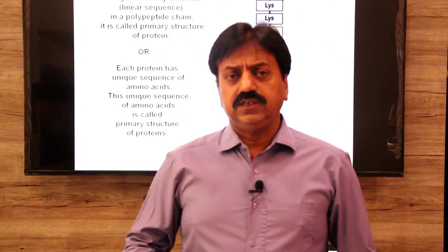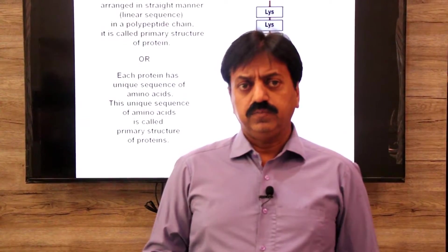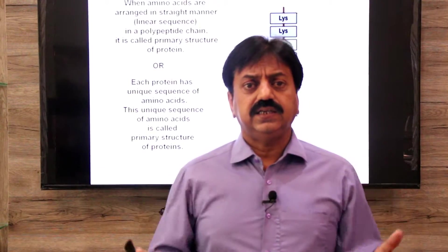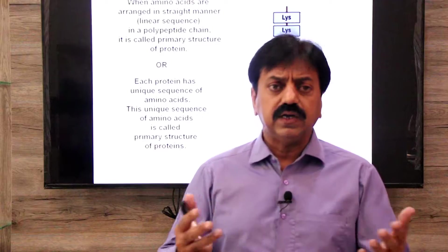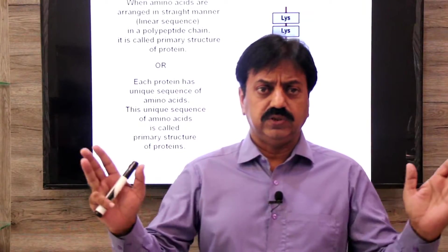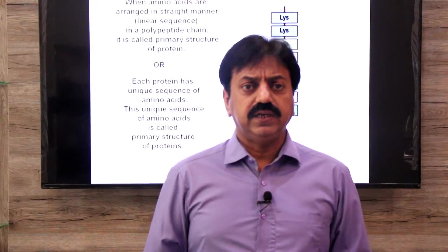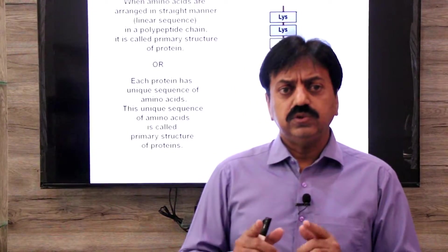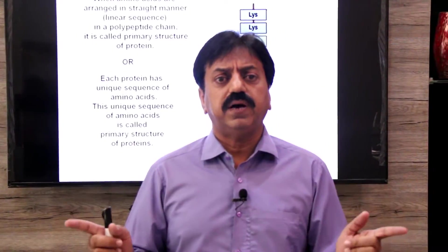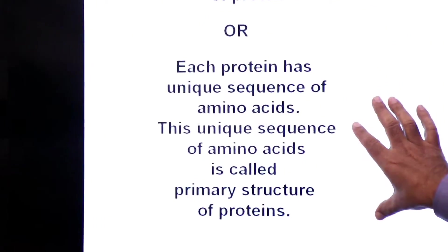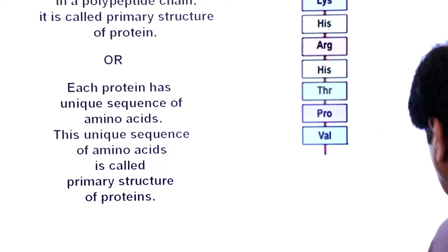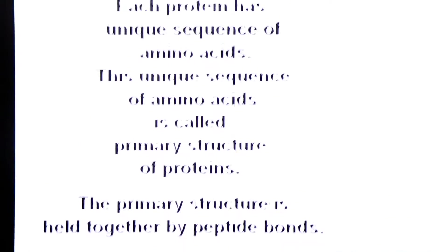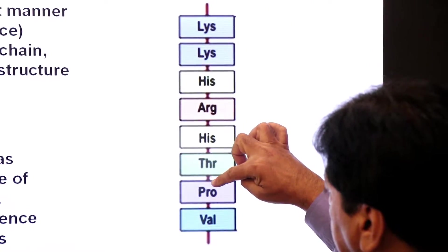Every protein has a separate gene that codes for a different protein, and that code comes from the nitrogenous bases of DNA, which is translated on ribosomes. For example, insulin has a different sequence of amino acids, keratin protein has a different sequence, and hemoglobin also has a unique sequence not found in any other protein. So every protein has a unique amino acid sequence — this is called the primary structure of protein. The primary structure is held together by peptide bonds, shown here in red color.